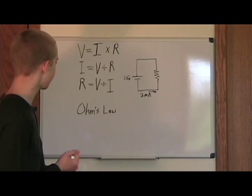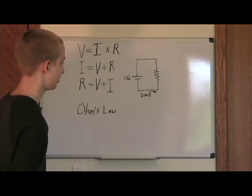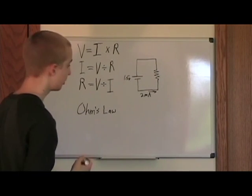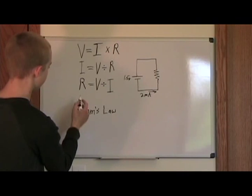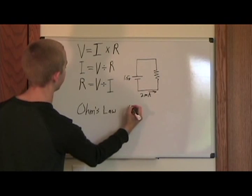I'm going to do one more quick example here. So let's say I want to know the resistance of this resistor. I know the current going through it, and I know the voltage. For this, we would use this equation, R equals V divided by I.